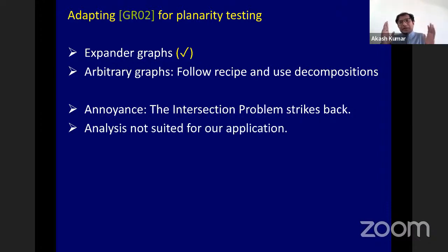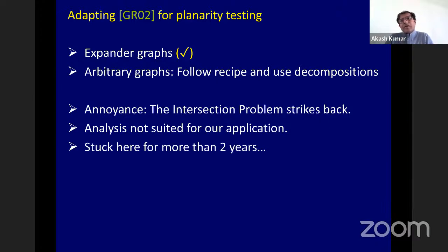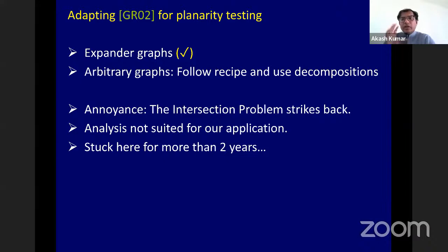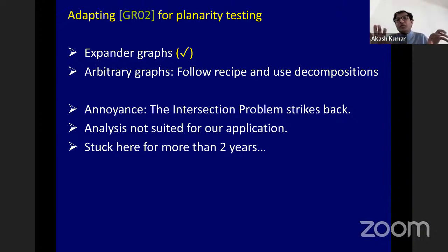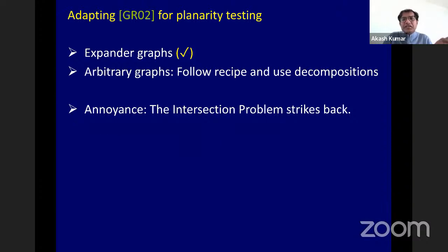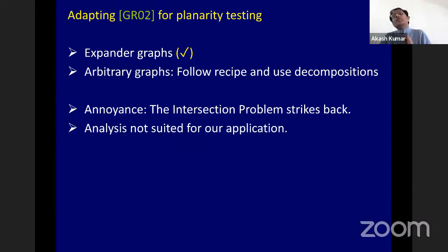The Goldreich-Ron analysis checks out for the minor-freeness question in expanders but does not work for arbitrary graphs. The problem is that the intersection issue strikes back. The difficulty is that if you decompose a general graph into expanding pieces using off-the-shelf expander decompositions, the internal expansion of each piece is merely 1 over polylog — comparable to its external expansion. Random walks of logarithmic length will just leak out of the piece and never come back.